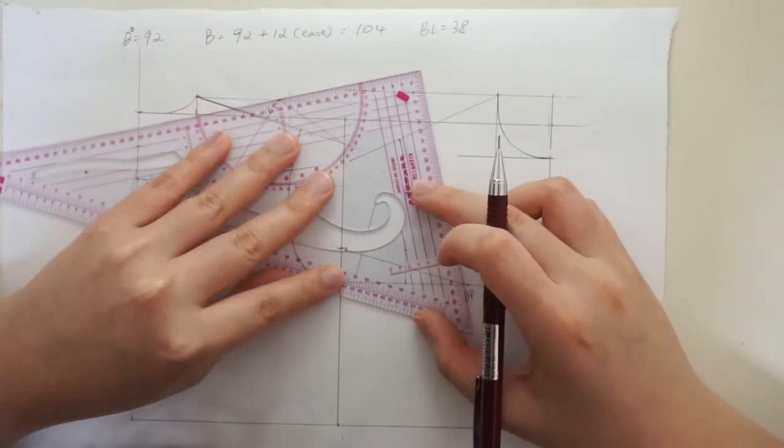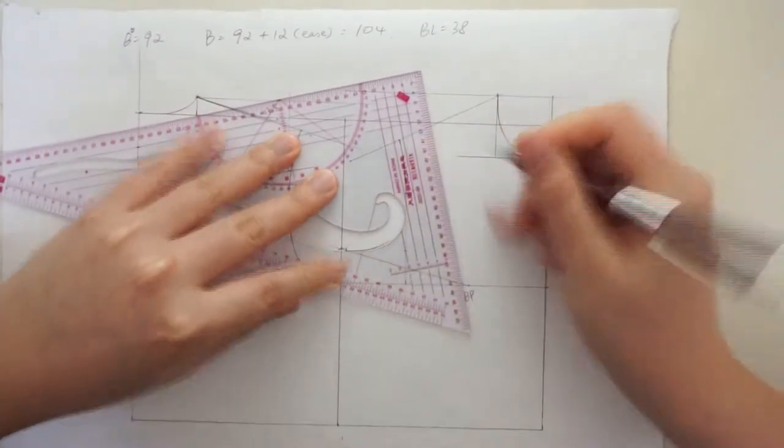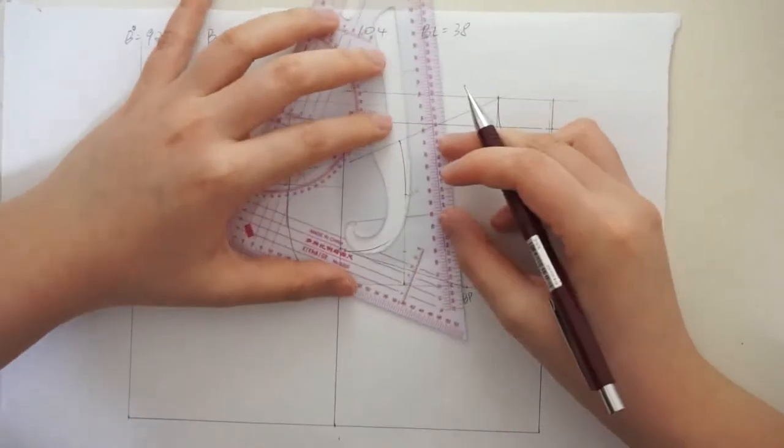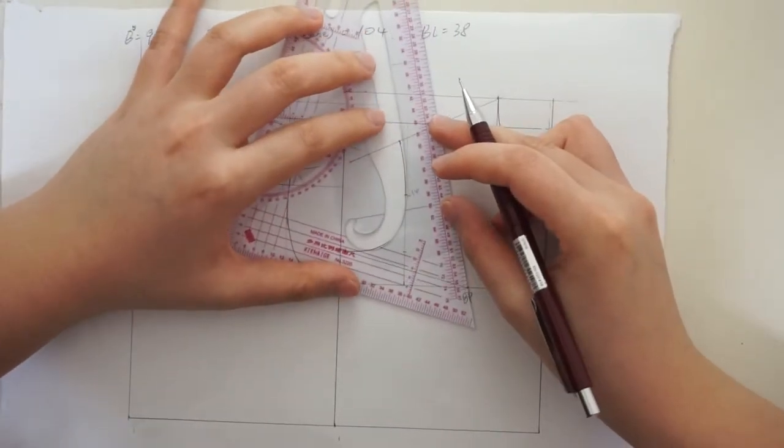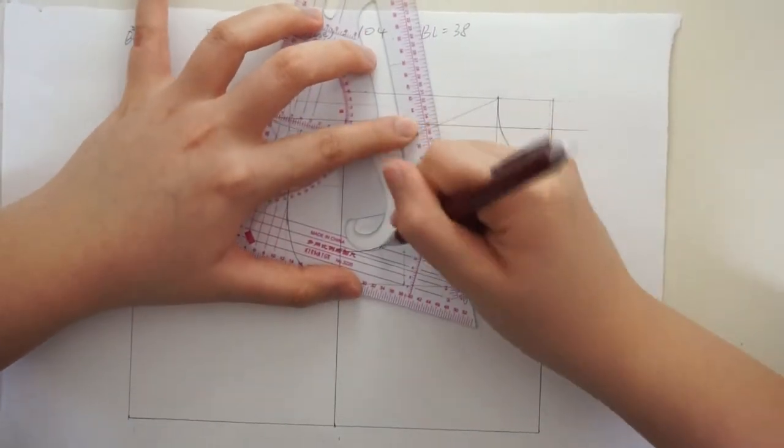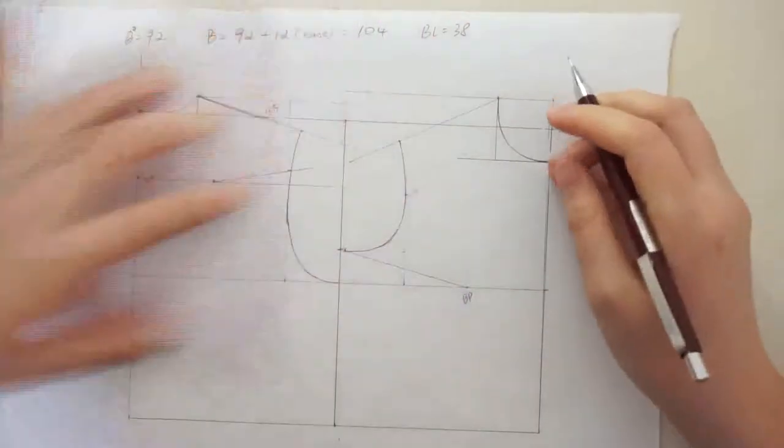Hello guys, for this video I'm going to show you how to draft a basic female bodice. For clear demonstration, I'm drafting on one foot size pattern by using a special ruler. If you want to draft a full size bodice, just use a regular ruler and follow the steps. Let's start.